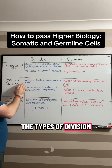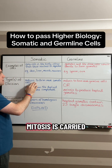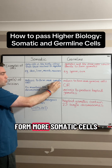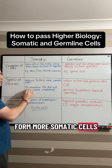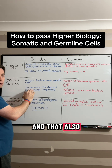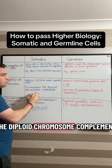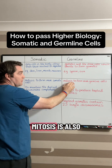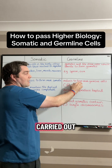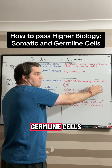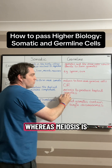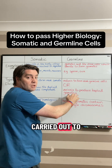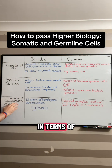In terms of the types of division, mitosis is carried out in somatic cells to form more somatic cells, and that also helps to maintain the diploid chromosome complement. Whereas in germline cells, mitosis is also carried out to form more germline cells, whereas meiosis is carried out to produce haploid gametes.